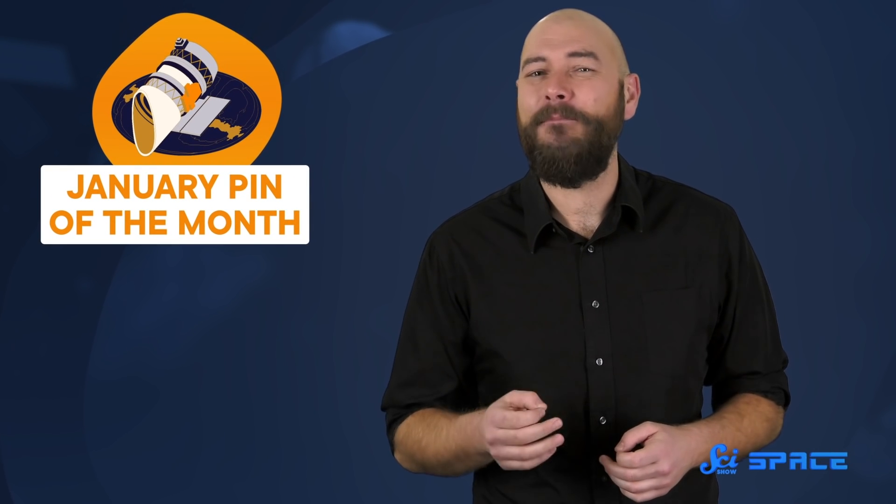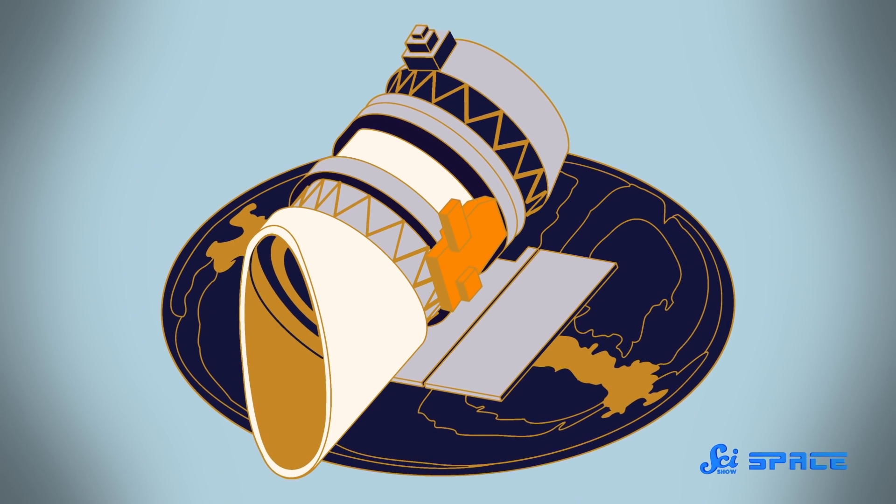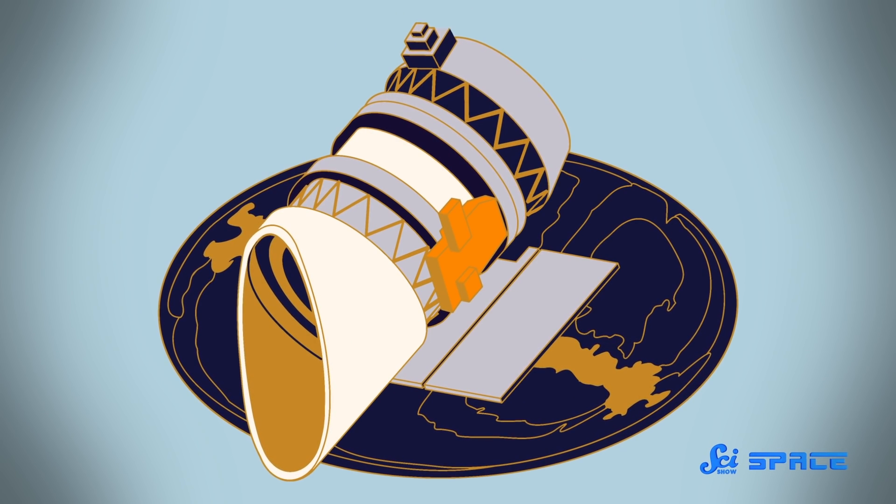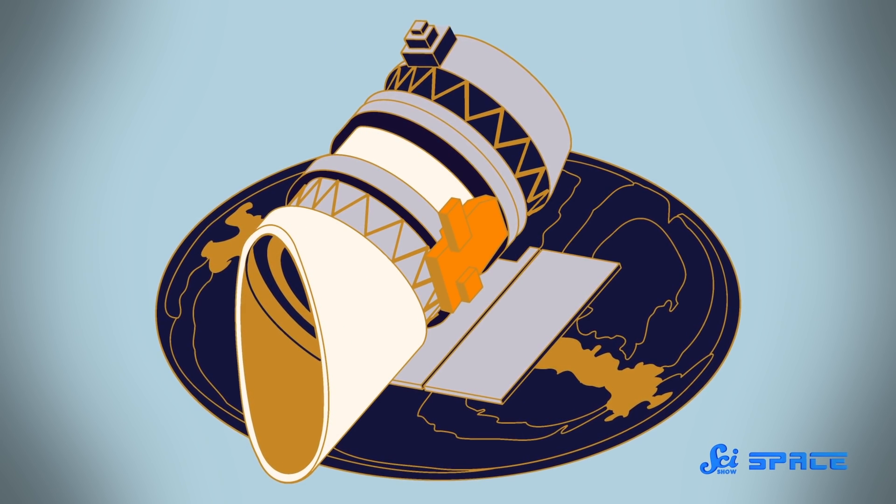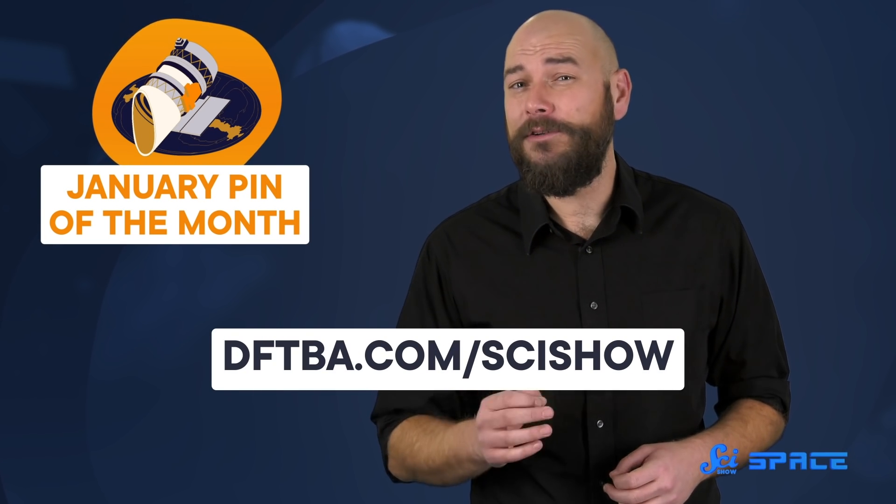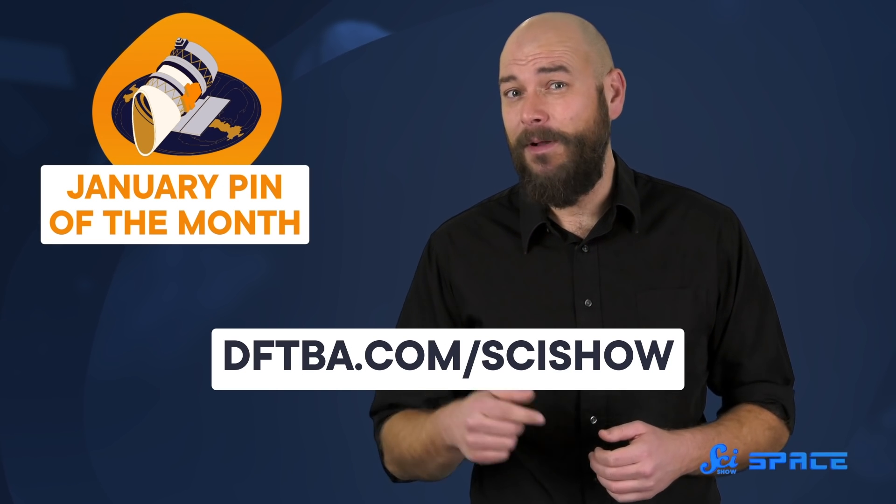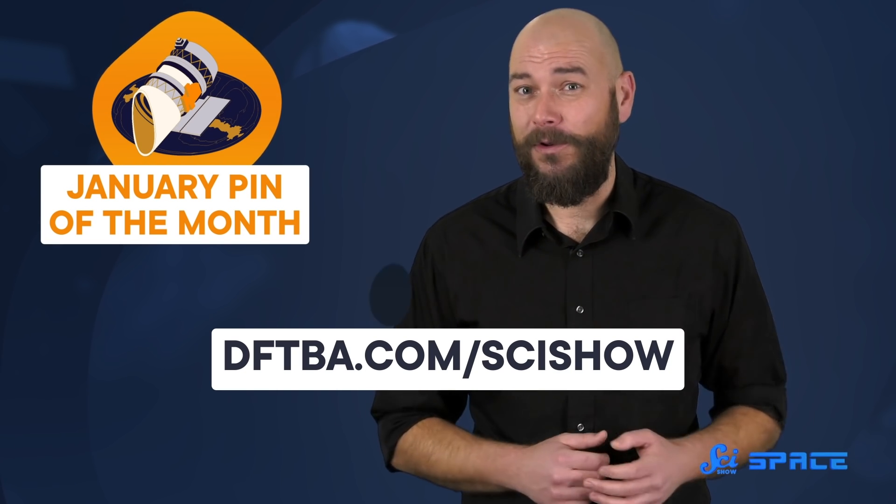So, to remind us that there's more than meets the eye, we decided to immortalize the IRAS telescope as this month's pin. This telescope has fundamentally changed the way we see space, and now you can take it home as a reminder of what's left for humans to uncover next. The pin will be available all month at dftba.com/scishow, but only during January. So, make sure to order yours soon, because next month we'll have a whole new pin for you.